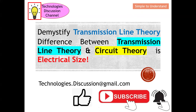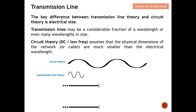As I mentioned earlier, the key difference between transmission line theory and circuit theory is the electrical size. What is electrical size? Under circuit theory, we typically deal with DC or low frequency signals — these have a long wavelength, giving a long electrical size. Under transmission line theory, the signal has a short wavelength, giving a short electrical length.